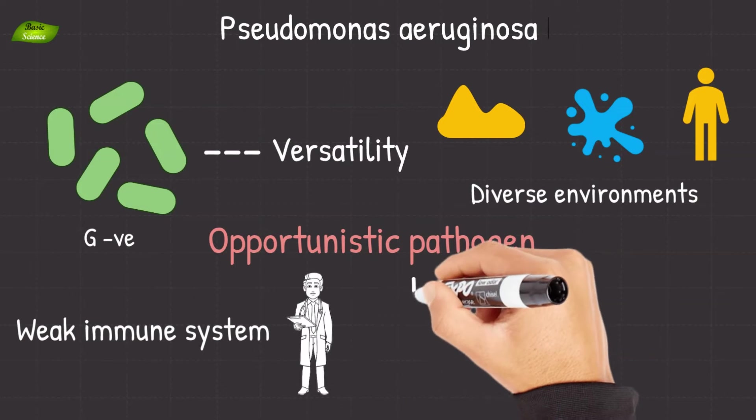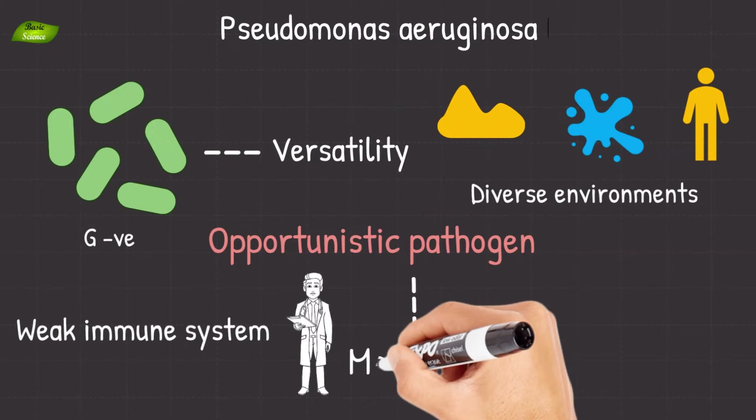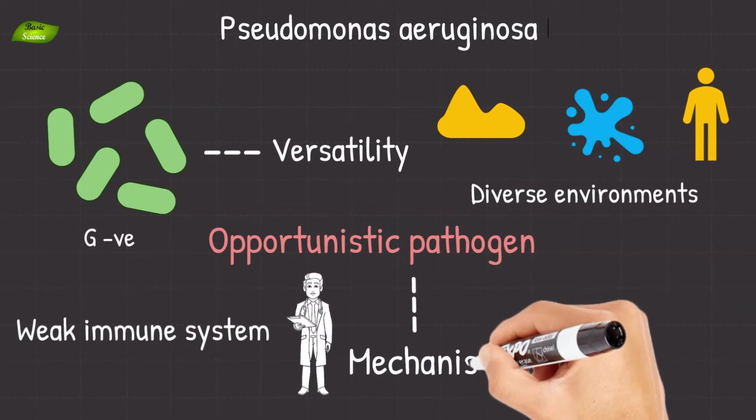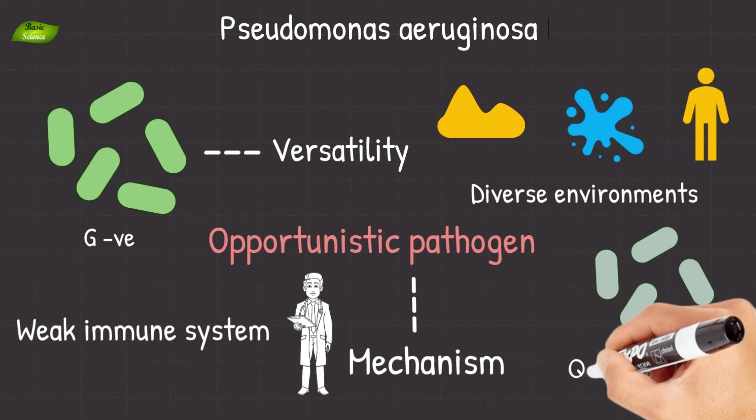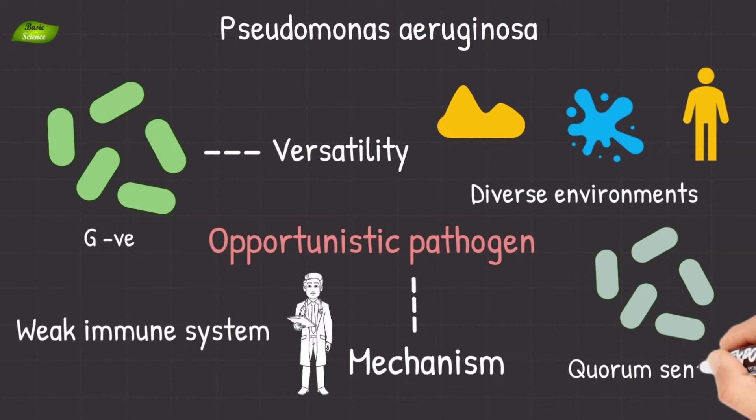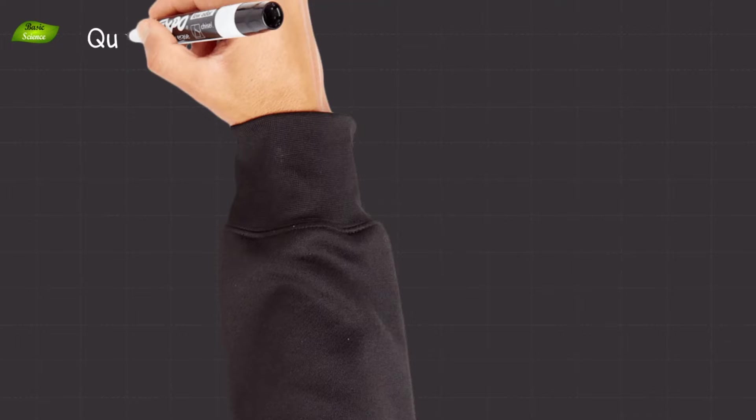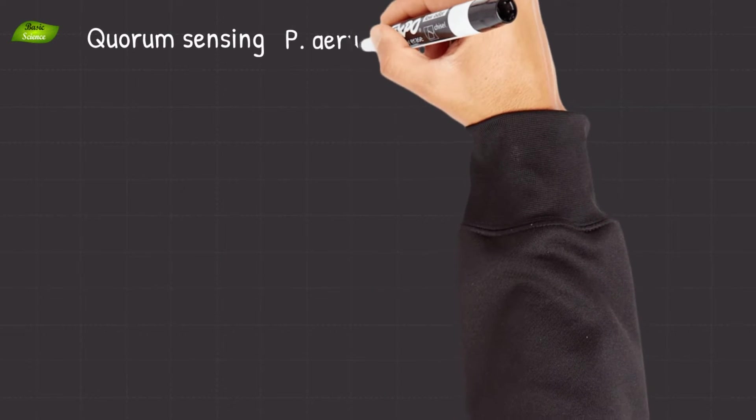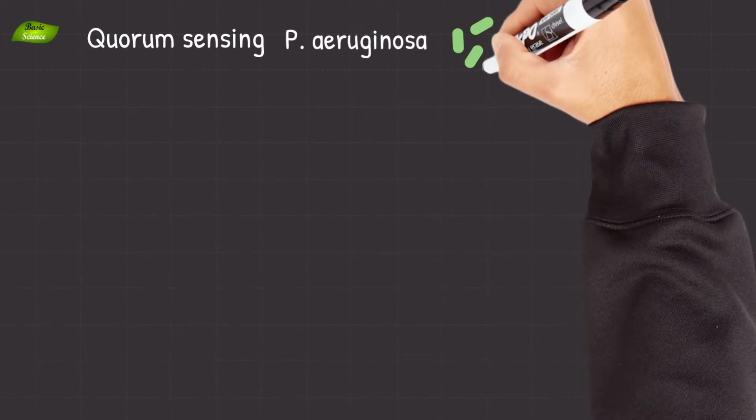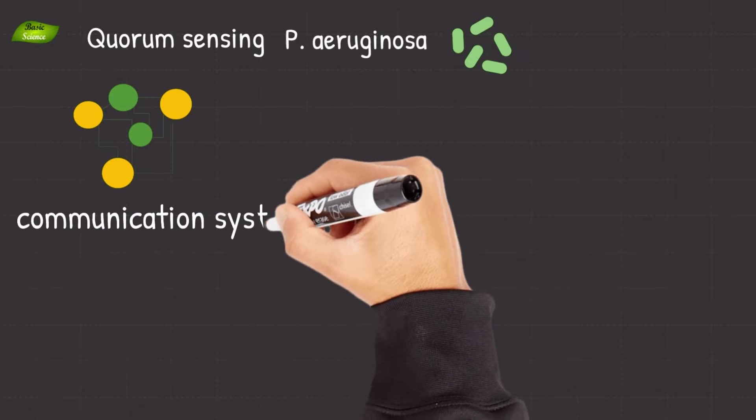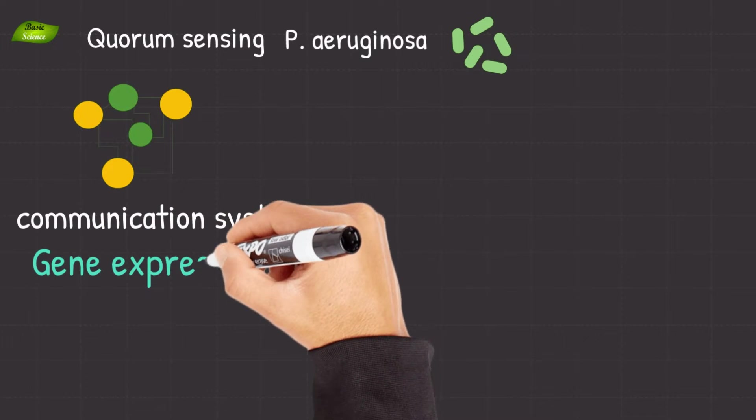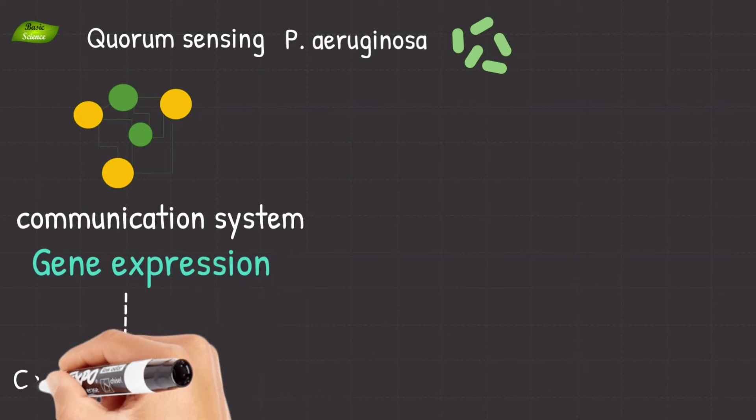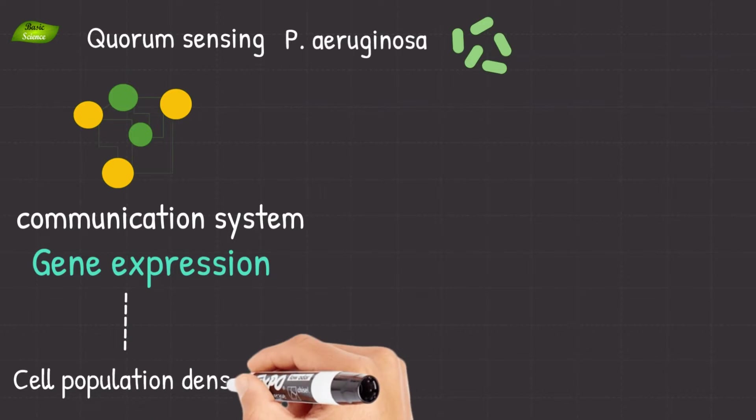One of the key mechanisms through which Pseudomonas aeruginosa regulates its virulence and pathogenicity is through quorum sensing. Quorum sensing serves as a sophisticated communication system that enables the coordination of gene expression in response to changes in cell population density.